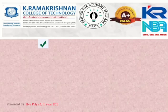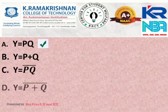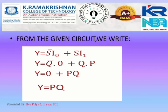So let us see — the correct answer is option A, Y is equal to PQ. Let us see how the answer is correct. From the question given, the selection line S — and S bar — is connected to I-naught. So S bar into I-naught, and S is connected to I1. Here, S bar is connected to Q bar, so that value is Q bar. And I-naught is connected to ground, so the value is 0.